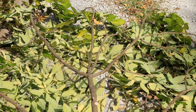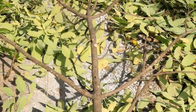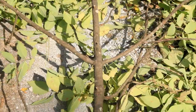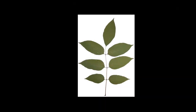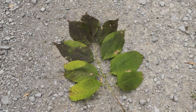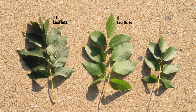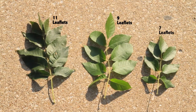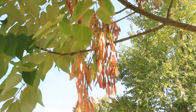Ash trees have oppositely arranged branches and leaves, and pinnately compound leaves. Depending on the species and the individual tree, ash trees in Illinois typically have five to nine leaflets. Remember, every species has genetic variability, so some trees of the same species may have a different number of leaflets. The fruit of ash trees is a clump of single samaras that hang down, like you see here.